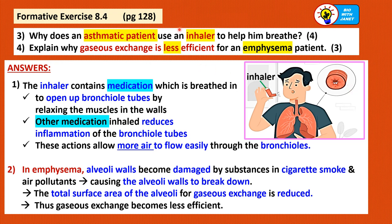Why does an asthmatic patient use an inhaler? The inhaler contains medication which is breathed in to open the bronchial tubes by relaxing the muscles in the walls — because in an asthmatic patient the muscles are contracting. Other medication like steroids reduces inflammation of the bronchial tubes. These actions allow air to flow more easily through the bronchioles. For emphysema: the alveolar walls become damaged by substances in cigarette smoke and air pollutants, causing the walls to break down. Thus the total surface area of the alveoli for gaseous exchange is reduced and gaseous exchange becomes less efficient.